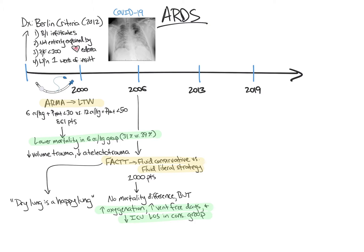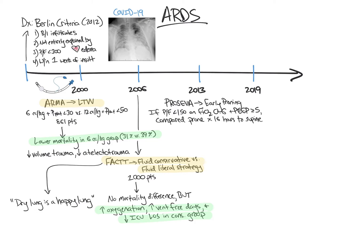What if the patient remains hypoxic after intubation and low tidal volume ventilation? The PROSEVA trial provides evidence for early prone positioning. If a patient had a P-to-F less than 150 on at least 60% FiO2 and a PEEP of greater than or equal to 5, PROSEVA compared prone positioning for 16 hours to supine. 466 patients were included. PROSEVA demonstrated lower mortality in the prone group, 16% vs. 33%.